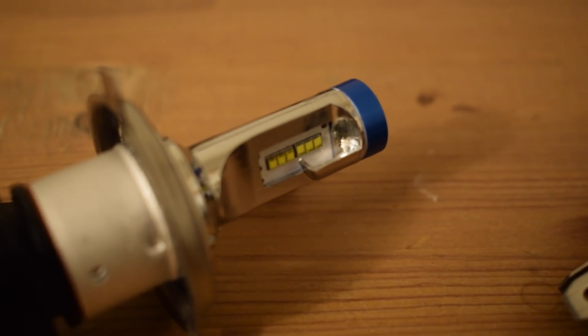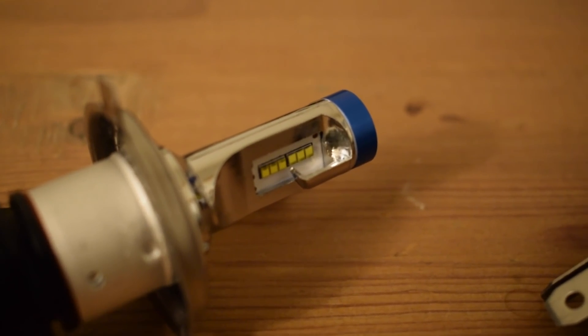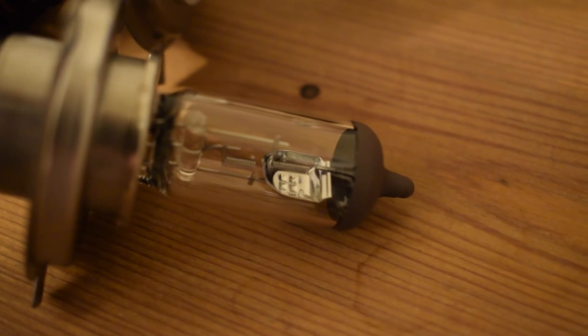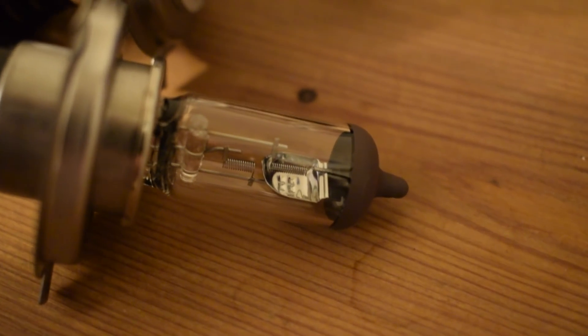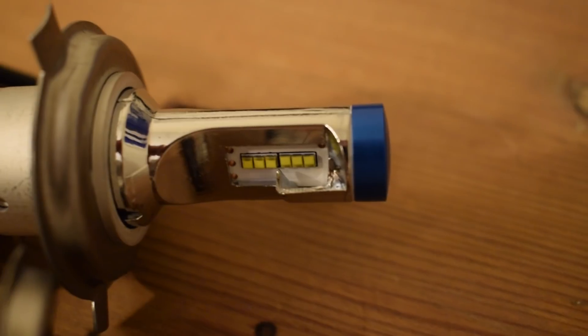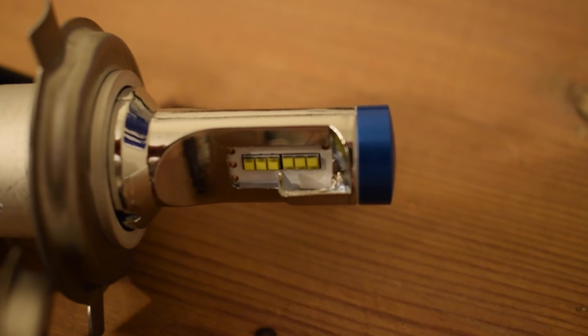Here you can see the tungsten coil in the halogen bulb and compare that to the LED ones. They look really similar and the size is really close to each other.